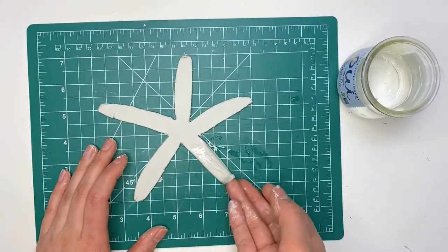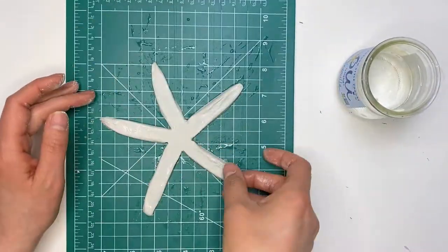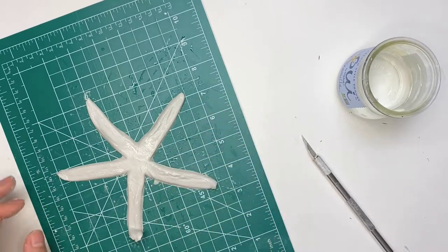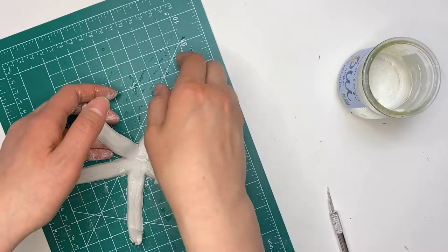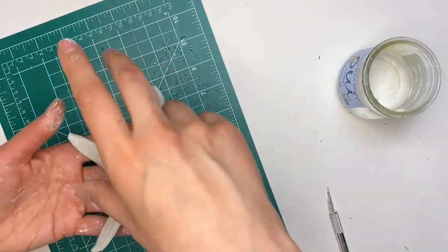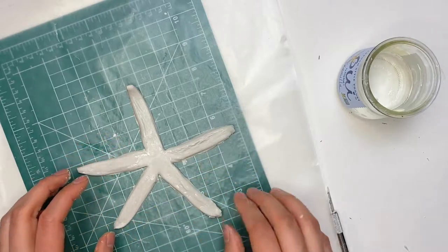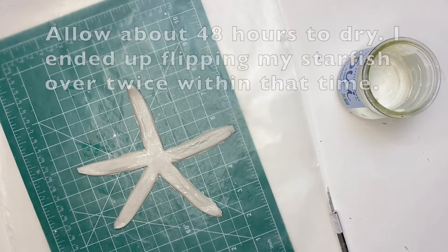Then you're going to use a little bit of water to soften the edges and smooth out any cracks or wrinkles in the air dry clay. And when you're happy with the way your starfish looks, you're going to carefully pick it up and I put my starfish on some wax paper to dry. You want to make sure to flip it over every eight hours or so so that it dries evenly.